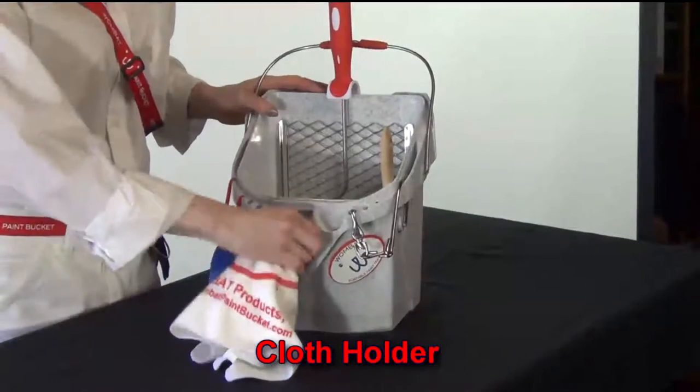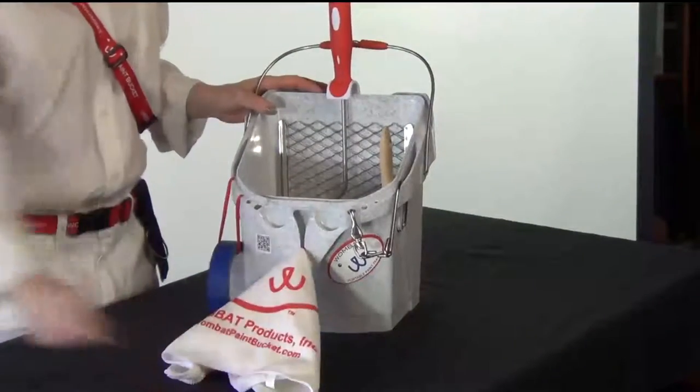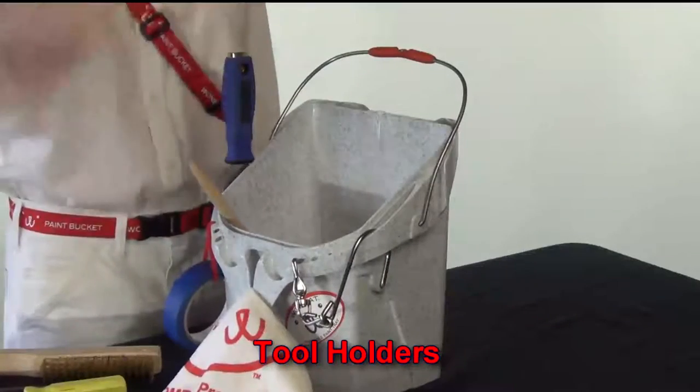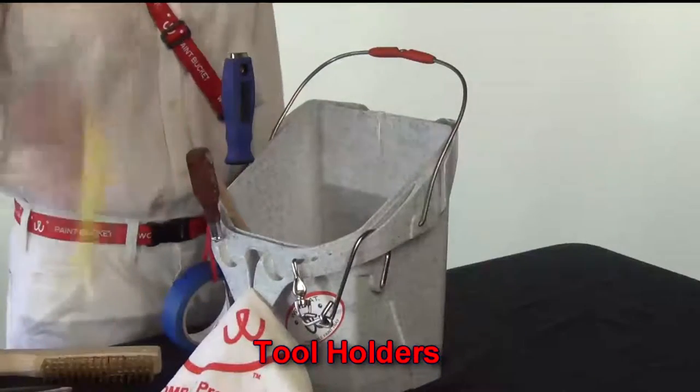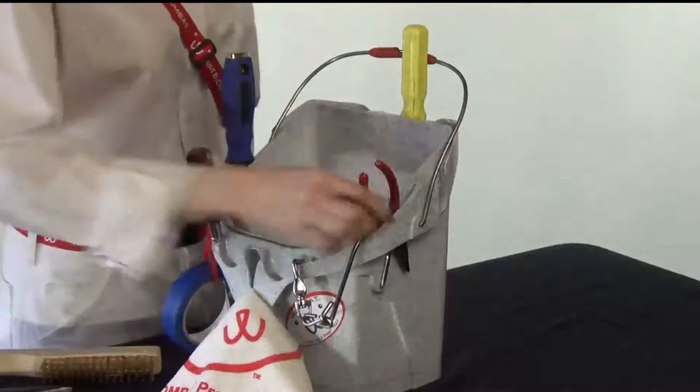To keep your cleanup cloth handy, just slide it into the slot in front. Holes and slots around the rim hold your scraper, screwdriver, pencils, pliers, tape measure, and much more.